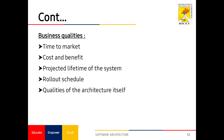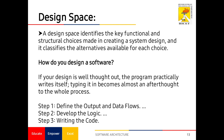For business qualities, when creating a good software product for stakeholders, certain rules must be followed: the product should have a short time-to-market, the cost should be low and the benefit high, and the project lifetime should be long — meaning maintenance should be minimal. The rollout schedule should be fast, and the quality of the architecture itself must be improved. The design phase identifies key functions and structural choices in the system and classifies available alternatives for each choice.